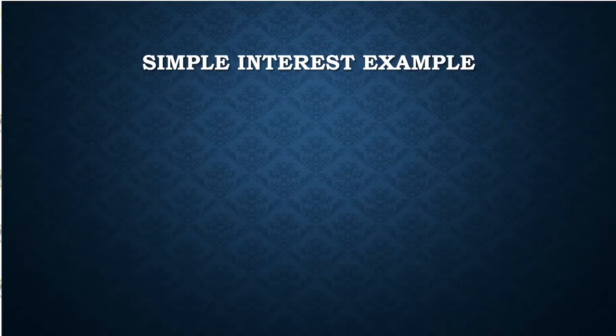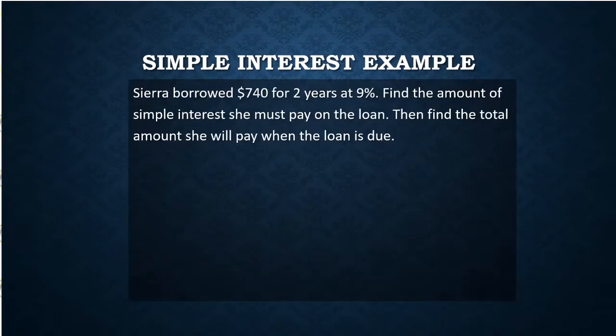So let's look at an example. Sierra borrowed $740 for two years at nine percent interest. We want to find the amount of simple interest she has to pay on the loan, and we want to find the total amount that she's going to have to repay. The total amount she's going to have to repay will be the original amount she borrowed, $740, plus any interest that she has to pay.